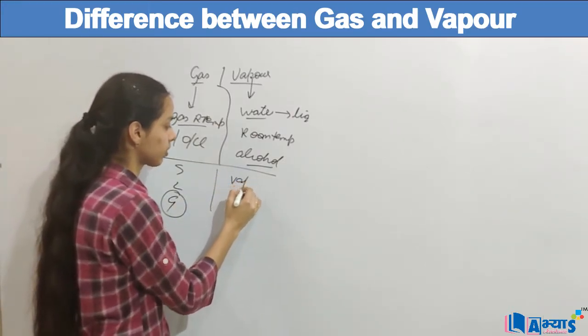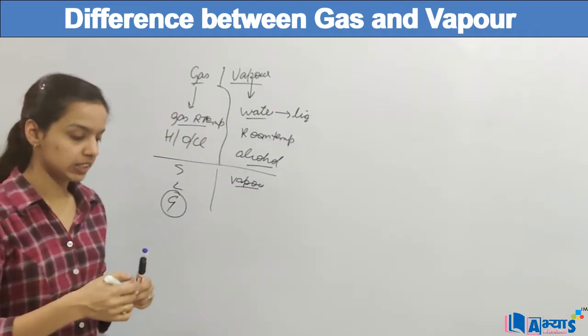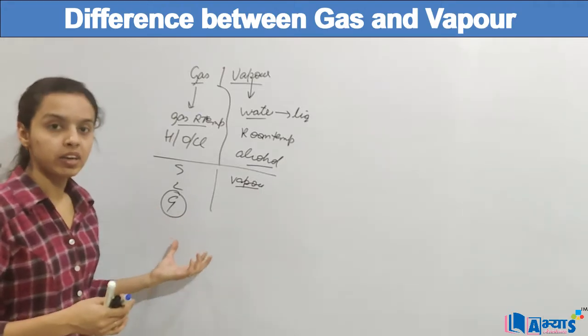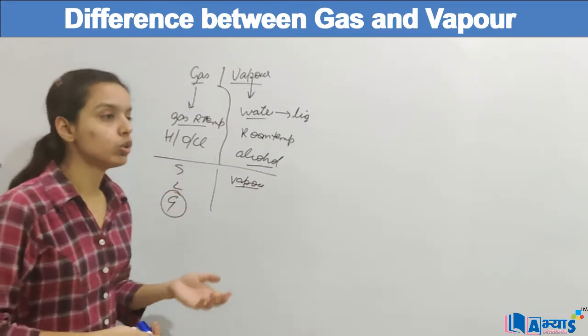But vapours, vapours do not form any type of matter. So we can say that one is a type of matter, other is not a type of matter. So these were the two differences.